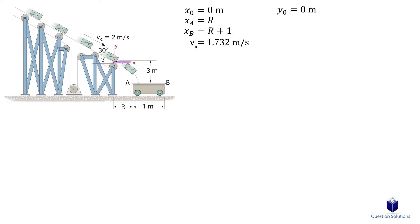For the vertical direction, we have the starting location at 0 meters. The final location, or in other words, the distance the package falls, is negative 3 meters. The vertical component of velocity is negative 2 sin 30 degrees, or negative 1 meters per second.